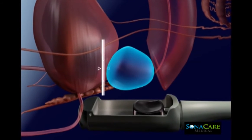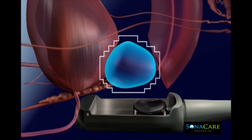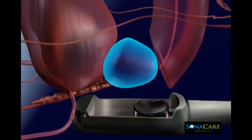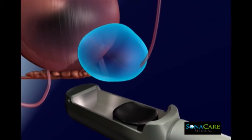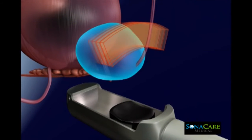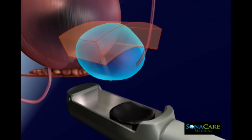In preparation for ablation planning, the Sonoblate imaging transducer maps the morphology of the prostate gland in real time. This allows the physician to create a customized plan for the procedure in multiple ablation zones.